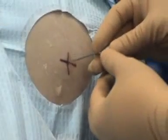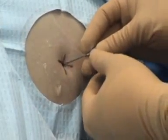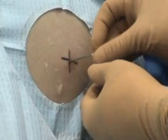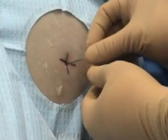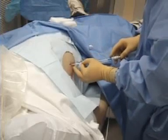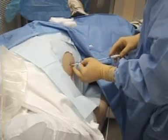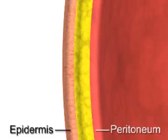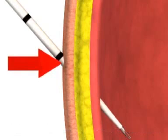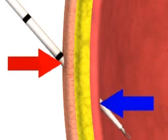Begin by making a small puncture in the skin with either a scalpel or a large gauge needle to facilitate advancement of the paracentesis catheter. Next, advance the catheter through the epidermis. In this video, we will demonstrate an angular entry technique in which the cutaneous site of insertion does not directly overlie the site of penetration into the peritoneal cavity.